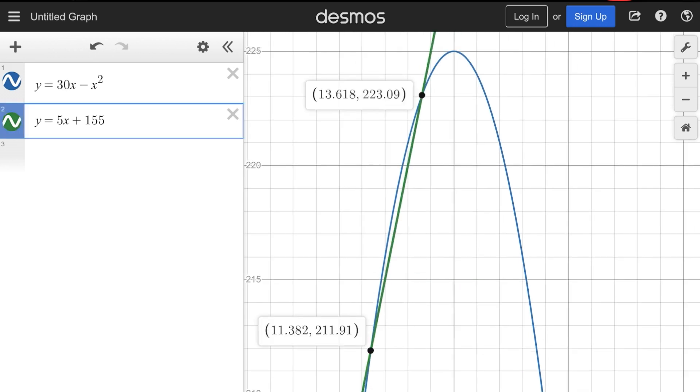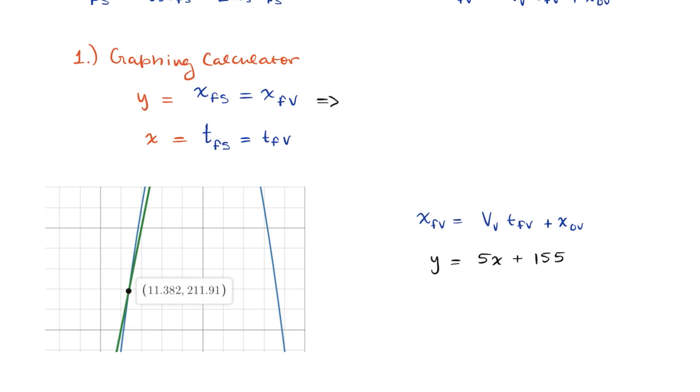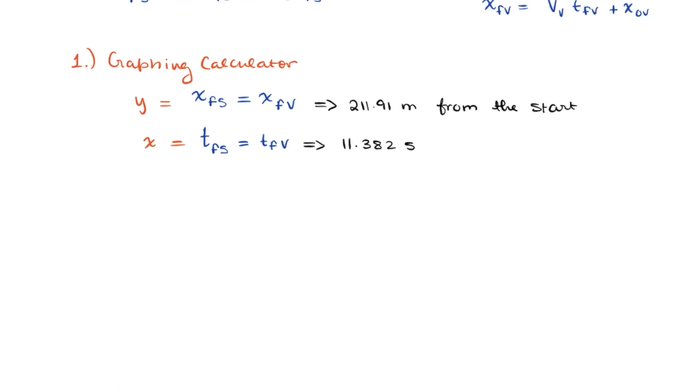Now let's input those equations into a graphing calculator. Now let's look at our points of intersection, and there are two of them. But we're going to disregard the second one because chronologically, if the first collision occurs, the cars won't really be moving for the second collision to occur. We'll only look at the point that comes first on the x-axis. So judging by our coordinate, our vehicles would crash at 211.91 meters from the start, at the time of 11.382 seconds from the start as well.